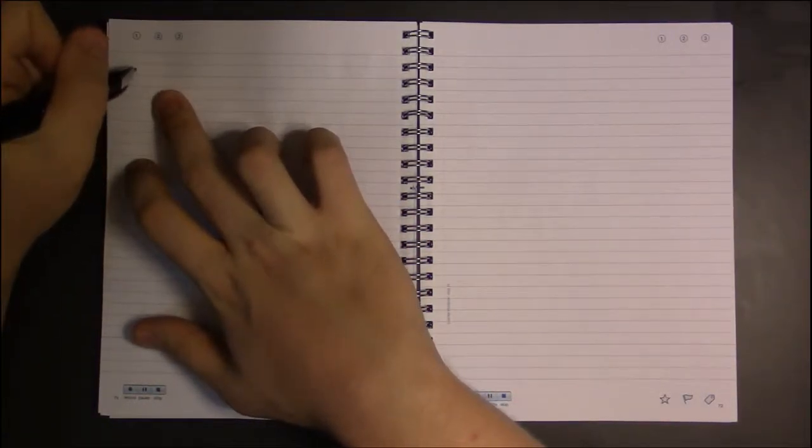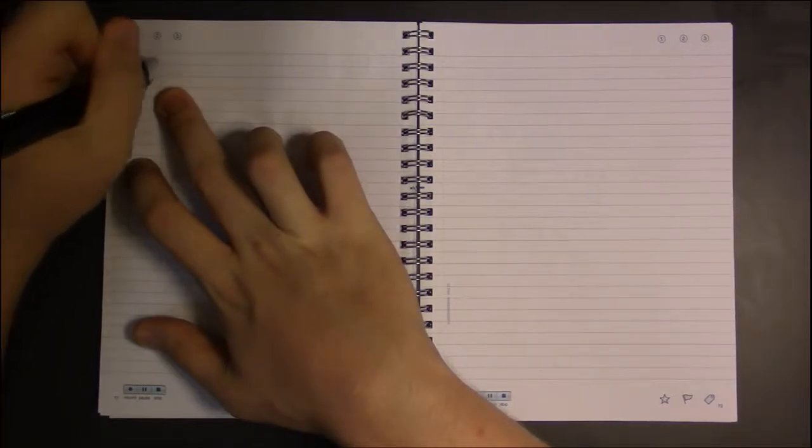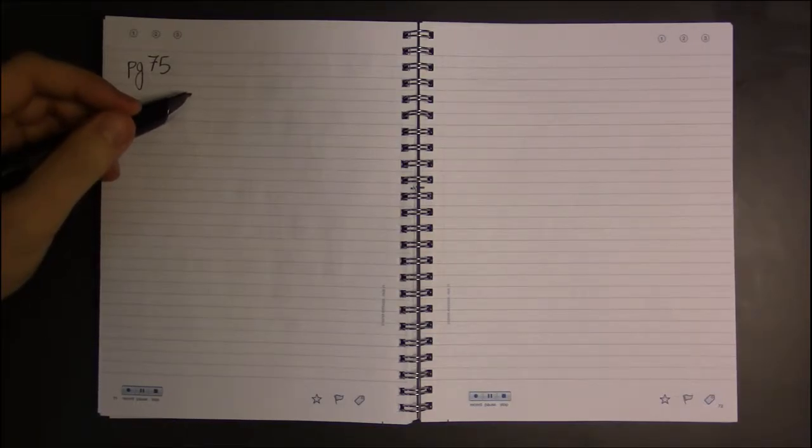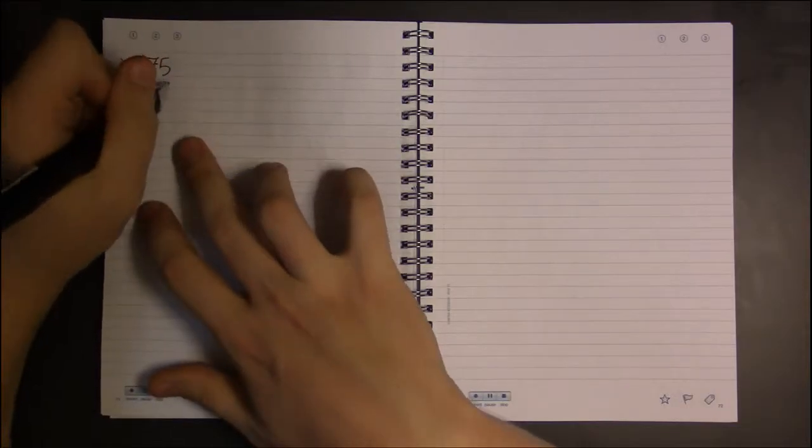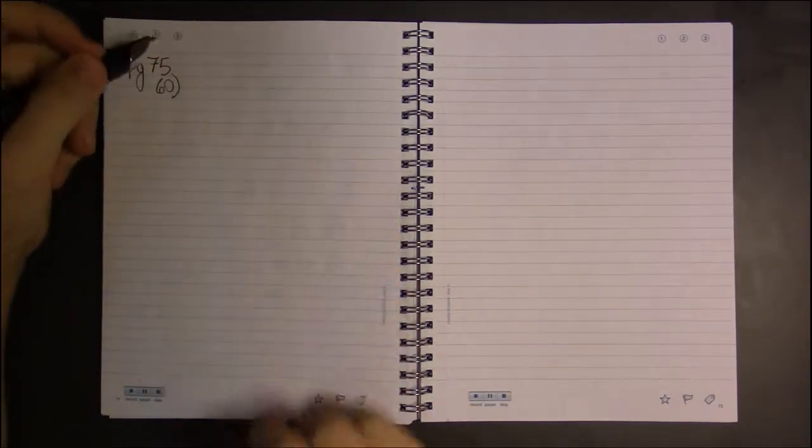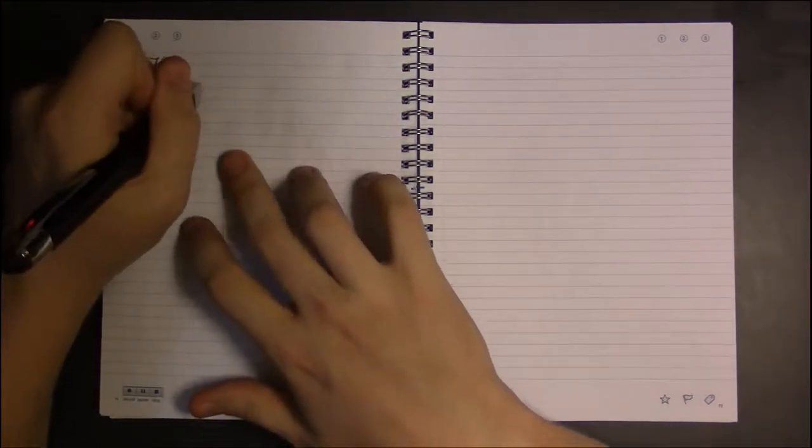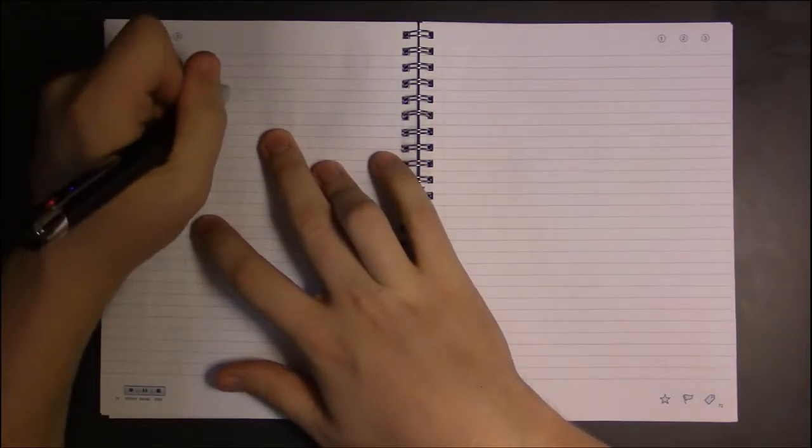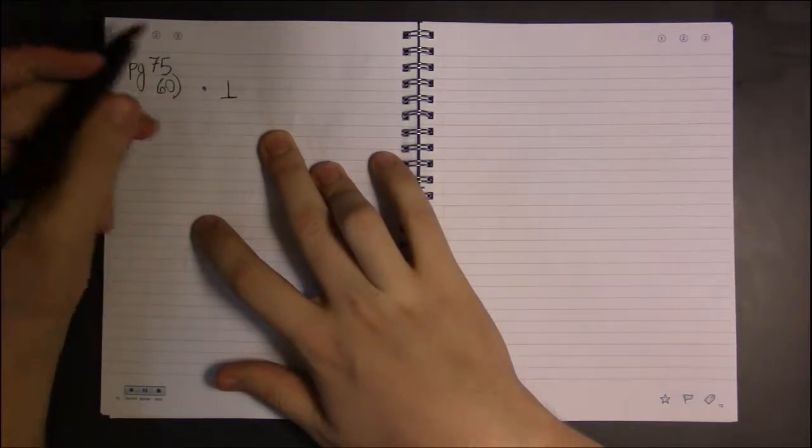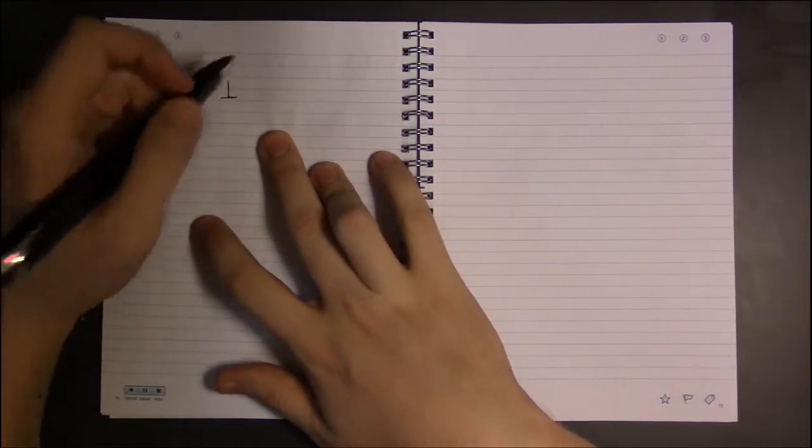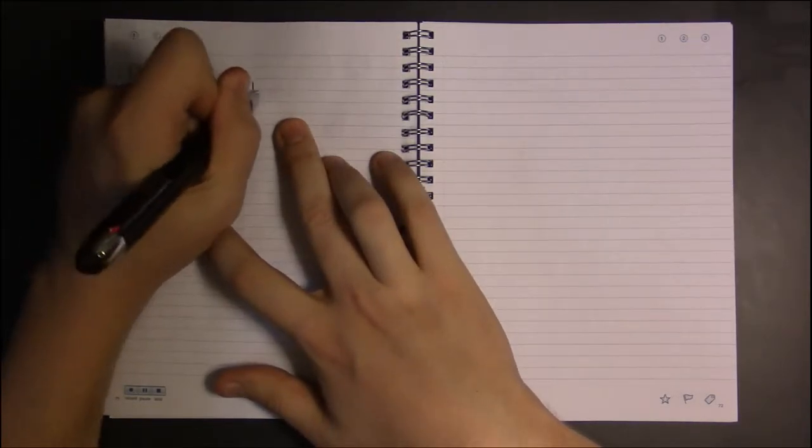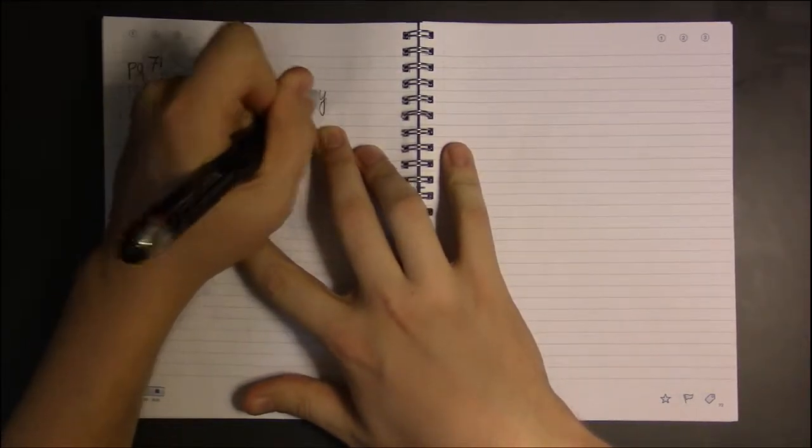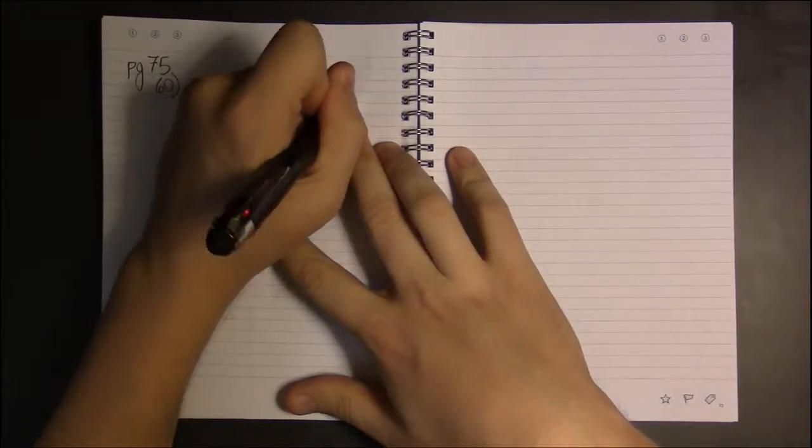So I'm on page 75, and I'm looking at problem 60. We want to find the line with the following properties. One, it should be perpendicular. That's the symbol, if you remember from geometry, the symbol for perpendicular.